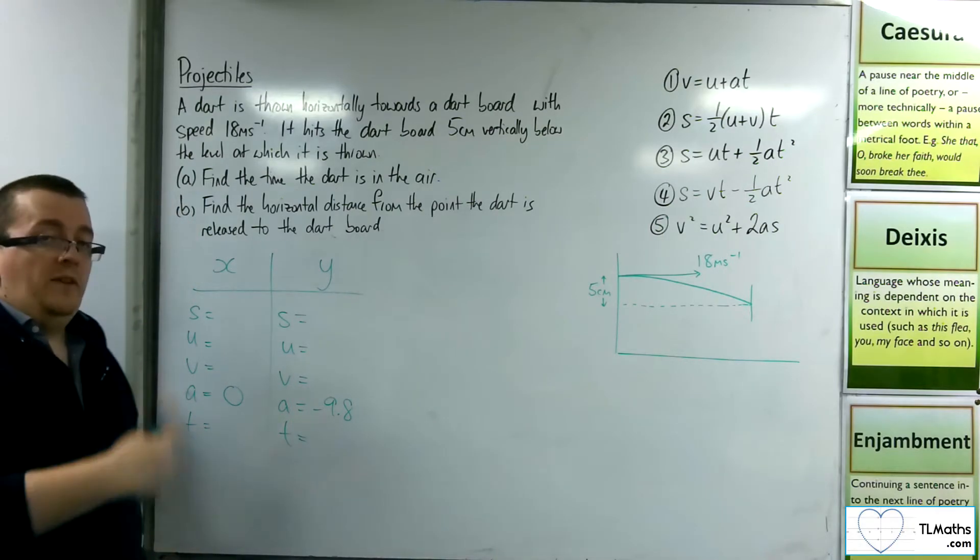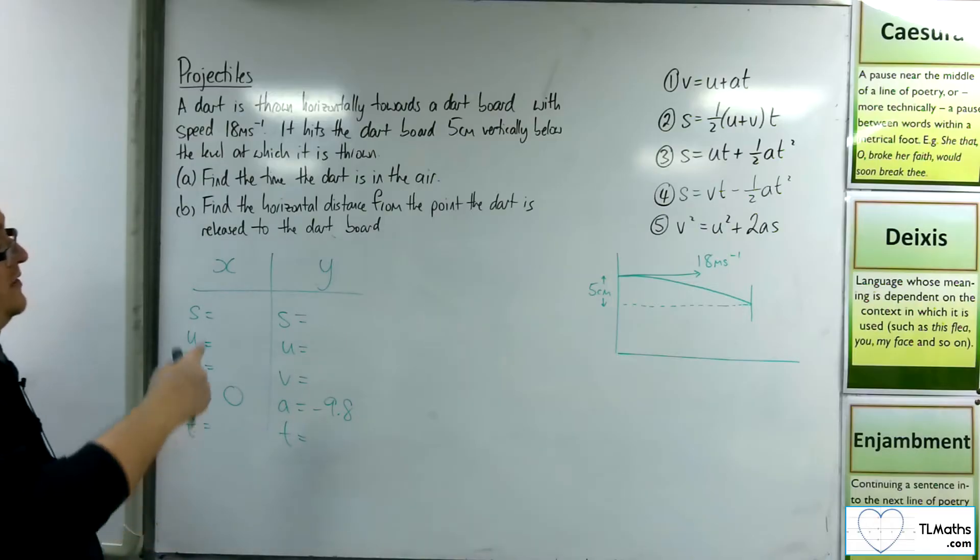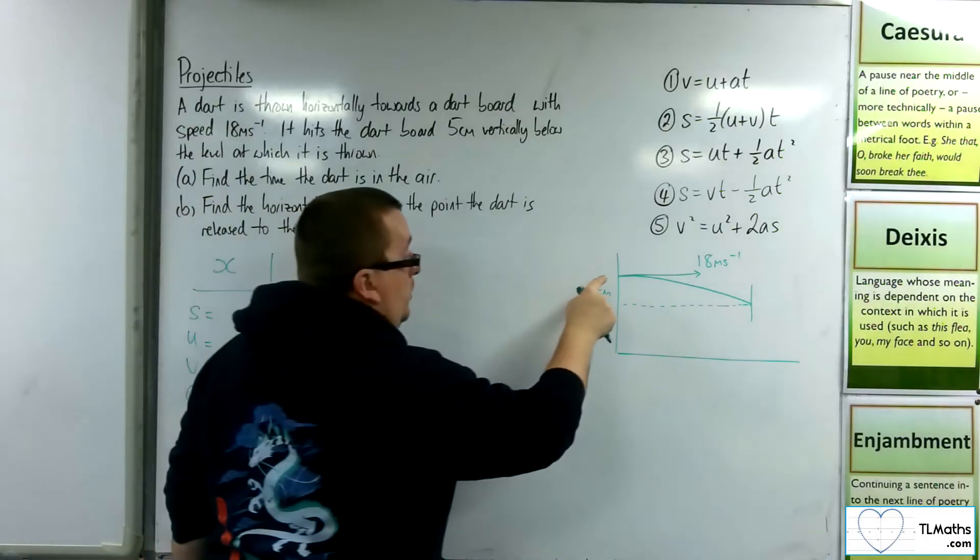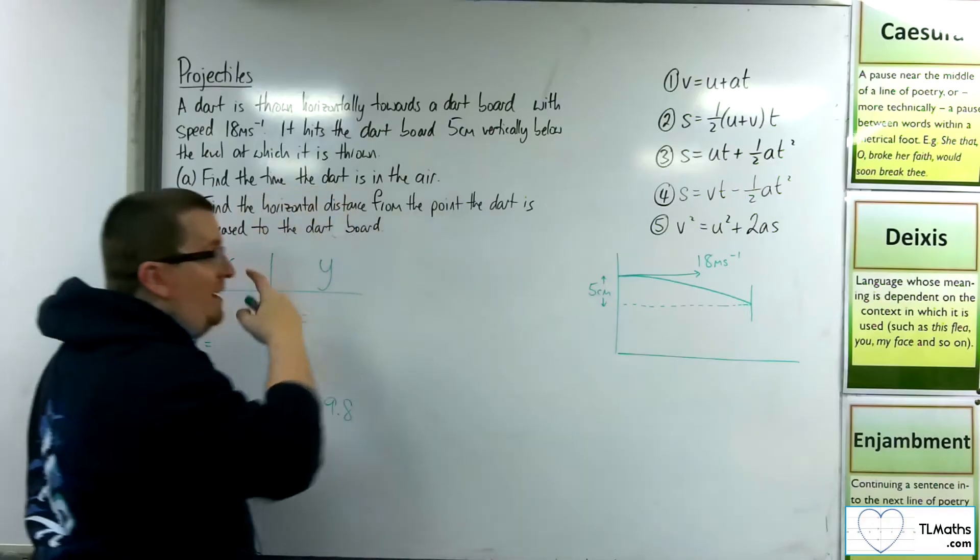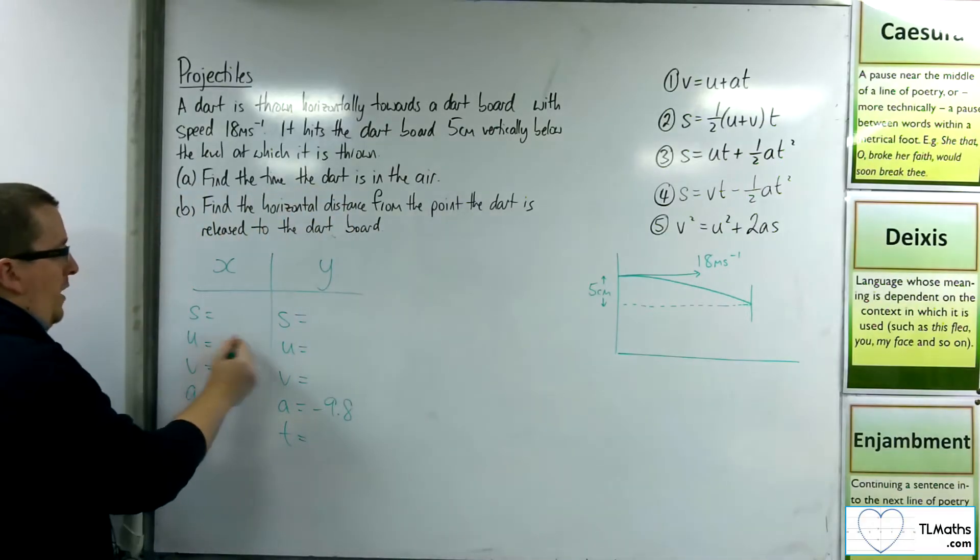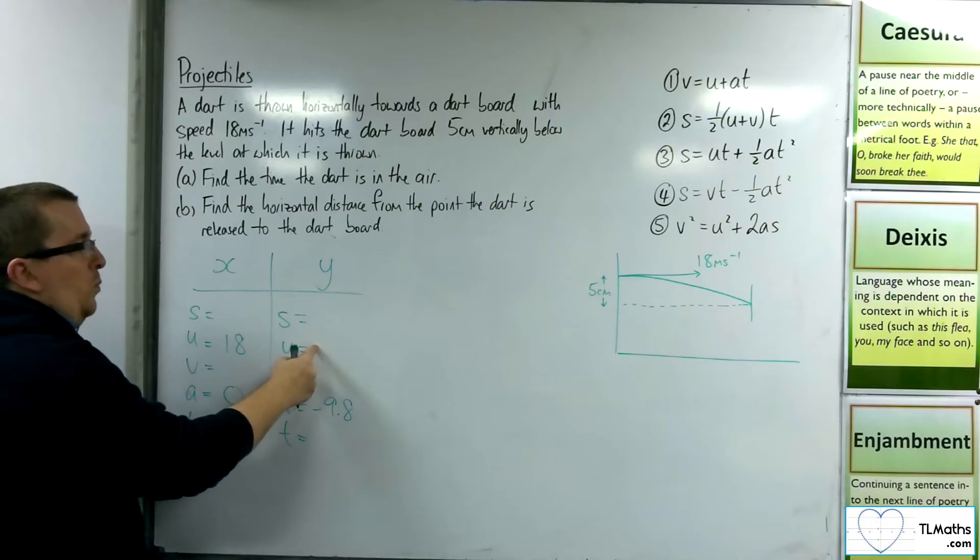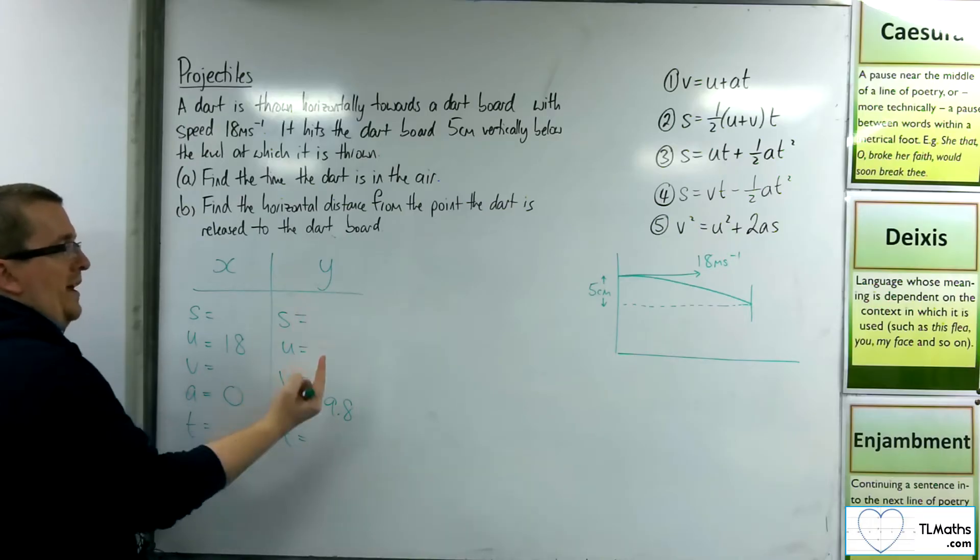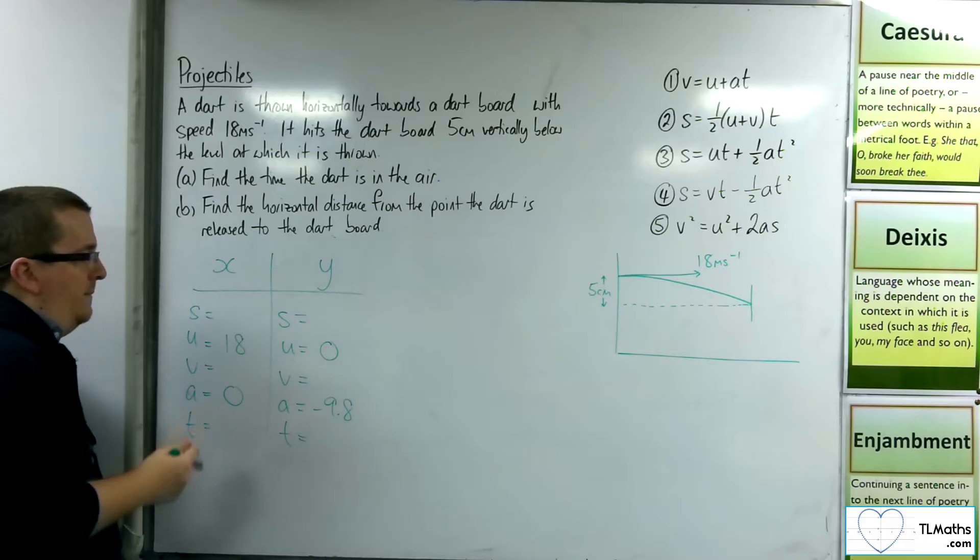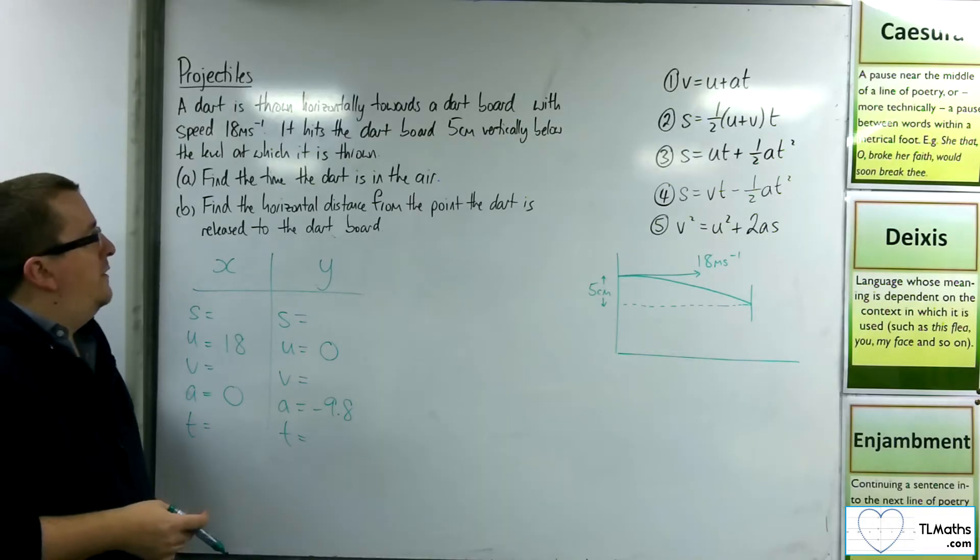Now as for the other bits of information, we know that the horizontal initial speed is 18 meters per second, so the horizontal velocity there is 18. Whereas the vertical one, well, it's not going up or down at that point, so it's 0. Okay, so this is the information that we have.